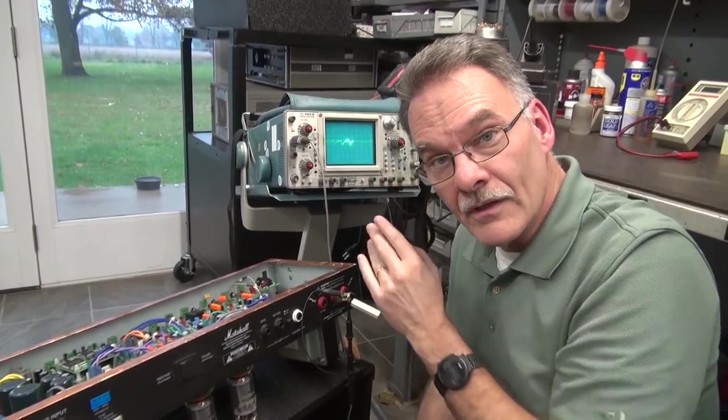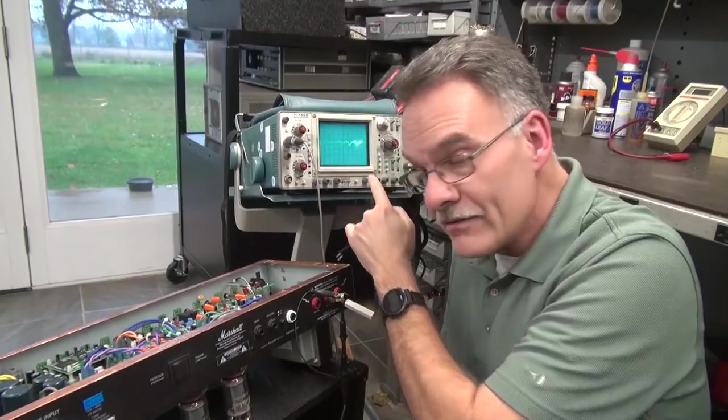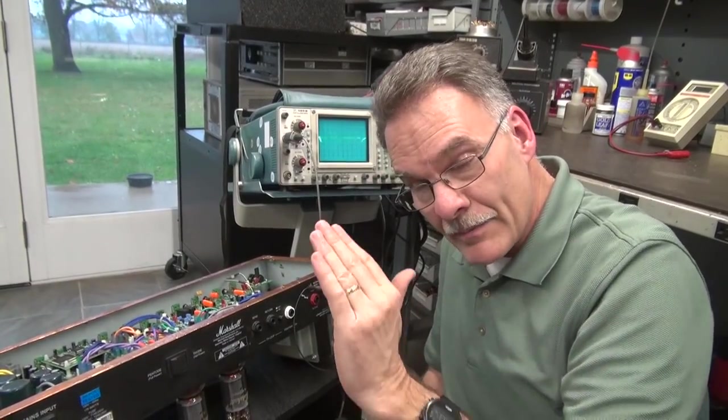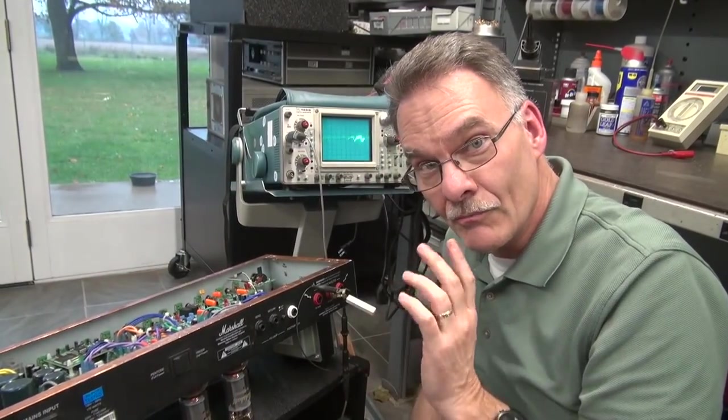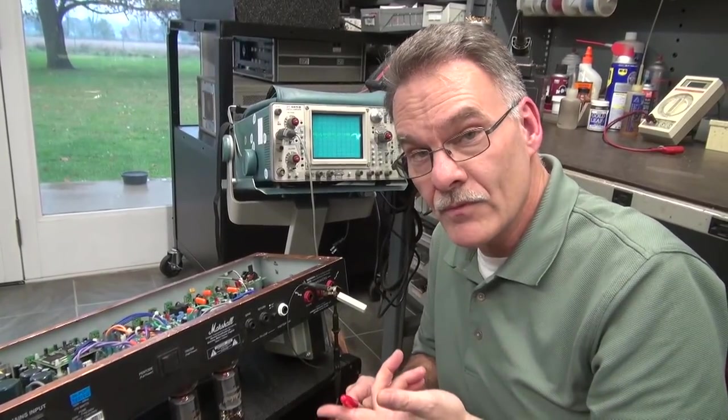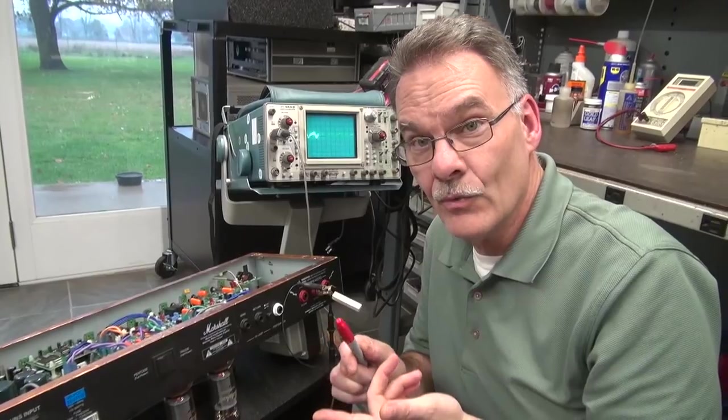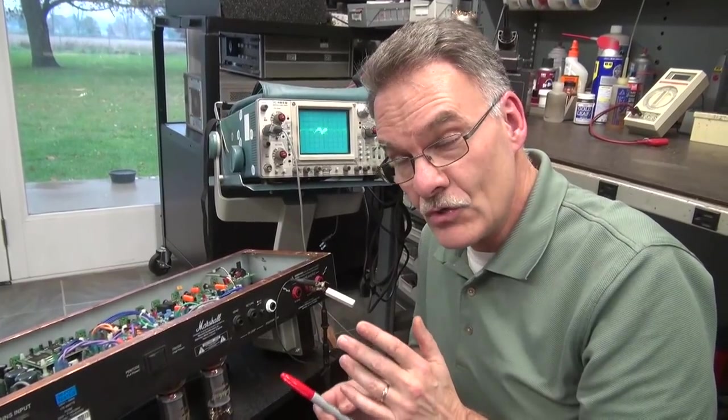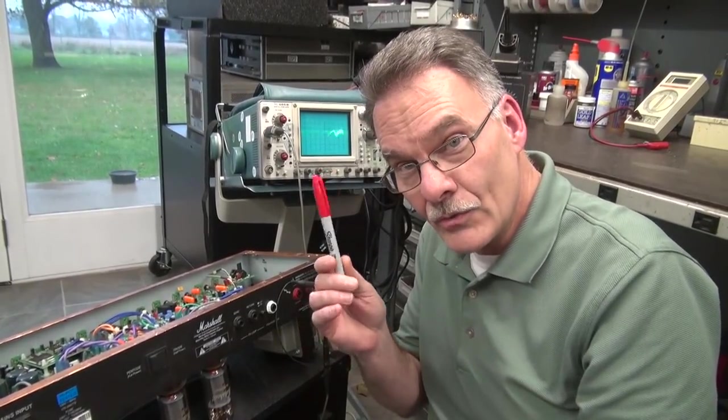So I thought, you know, that kind of has the same pattern as the top of that sine wave did, right? So maybe it's these output tubes. When I was testing the output tubes, one of them showed gas and the other one didn't. So one of these tubes could be hurt. So let's do the old tap test, right?